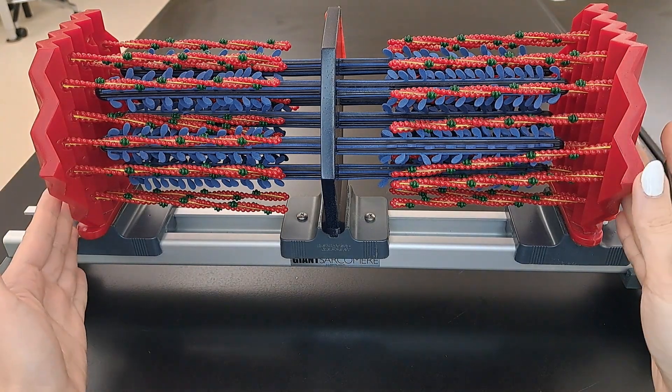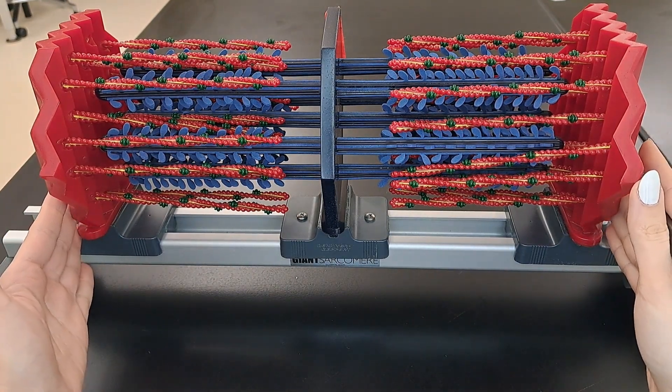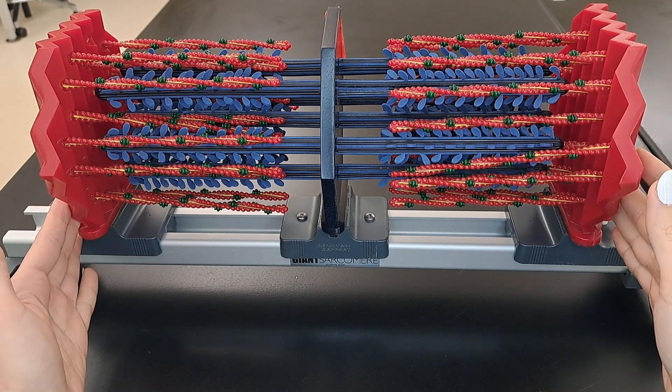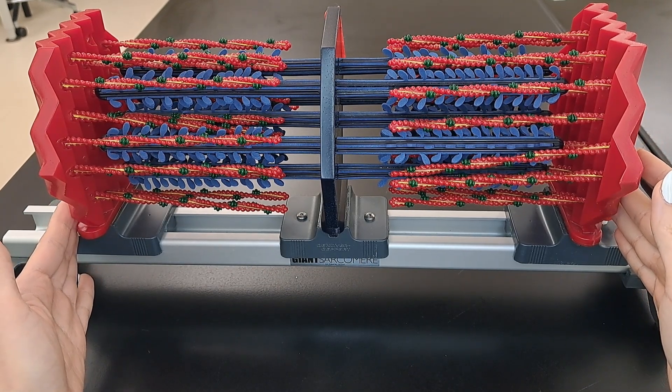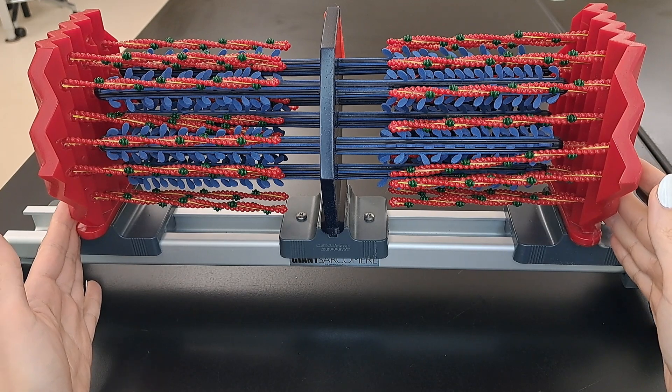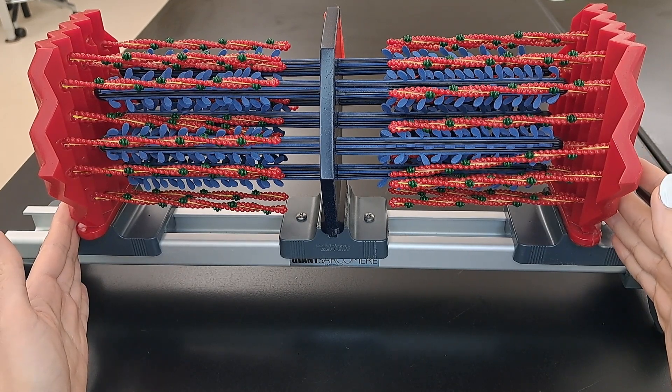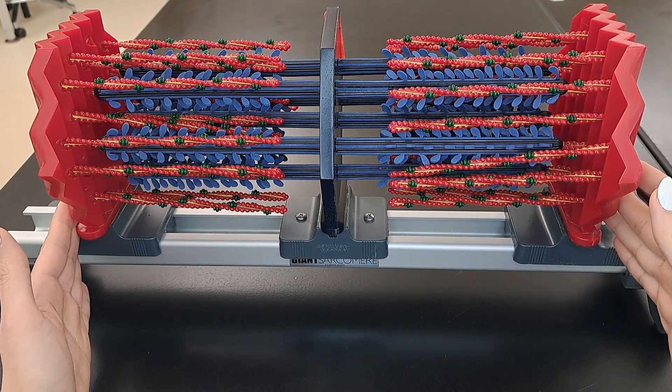This model represents one sarcomere. The sarcomere is the contractile functional unit of the skeletal muscle. We have millions of sarcomeres in each skeletal muscle in our body.